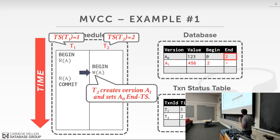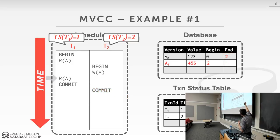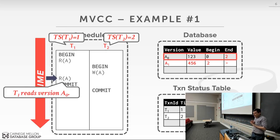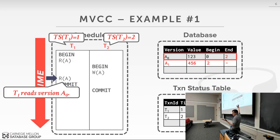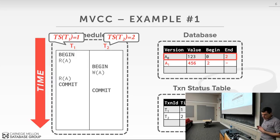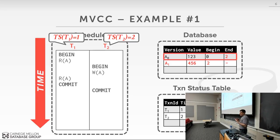Let's look at an example with conflicts. T1 reads A, writes A, then reads A again; T2 reads A and writes A. T1 creates new version A1 with begin=1, sets A0's end=1. Then T2 starts, adds an entry to the transaction status table, and reads A — but since T1 is still active, T2 reads A0 rather than A1. T2 then tries to write A and stalls because of the right-write conflict.